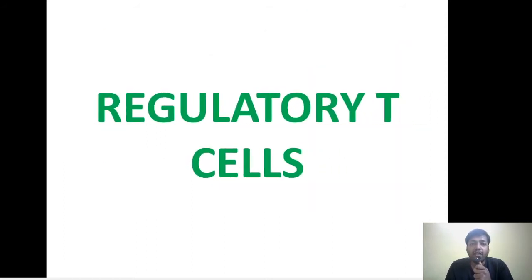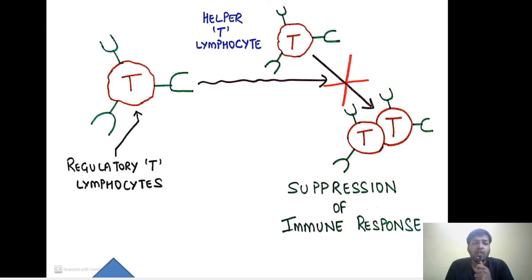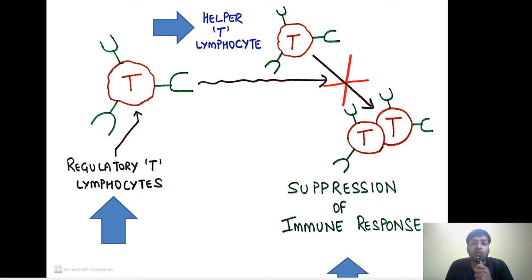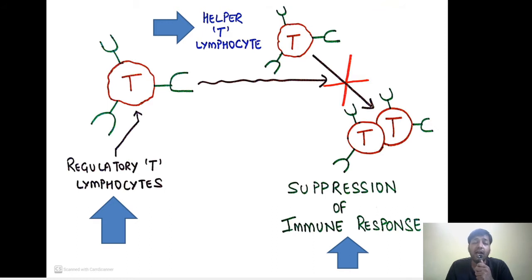Regulatory T cells suppress the activation of helper T cells, leading to suppression of the immune response. This is important because our immune system must be controlled — if allowed to act uncontrollably, it could harm our own body. So immune responses have to be regulated.